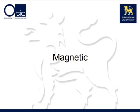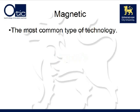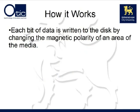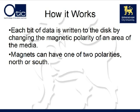The first of these is magnetic storage. Magnetic storage is the most common type of storage technology found on computers today. Some examples of devices that use magnetic storage include hard disk drives — the main permanent storage of a modern PC — floppy disk drives for storing small files in emergency recovery work, and tape drives for backing up large quantities of data. Magnetic storage works by changing the magnetic polarity, or direction, of an area of the storage medium. Magnets can have one of two polarities, north or south, which corresponds nicely to the zero or one of digital data.